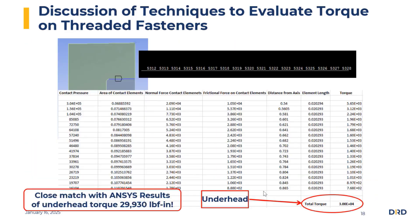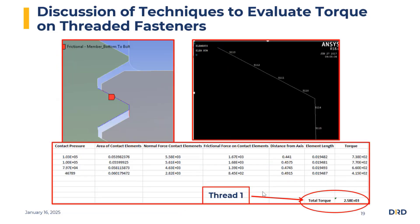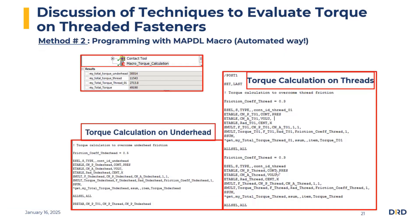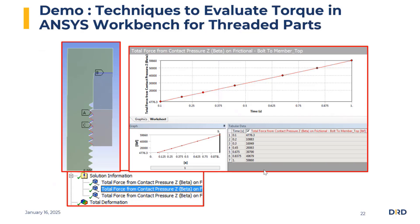The second method uses the relationship between torque and angle of turn, using the equation T equals K times D times F to evaluate torque. There is also a third technique using programming — we can key in command objects that will evaluate the torque on the underhead and thread regions directly. From that result you can estimate the 90% contribution to get the total torque.